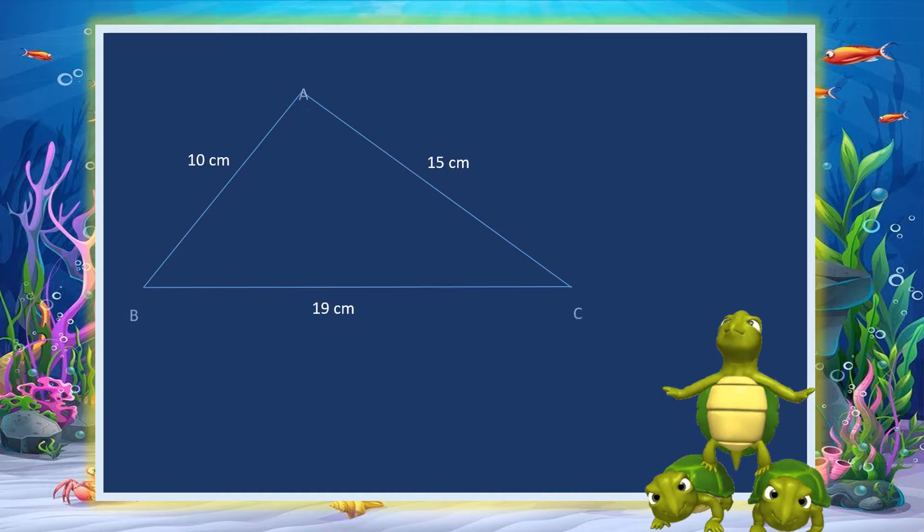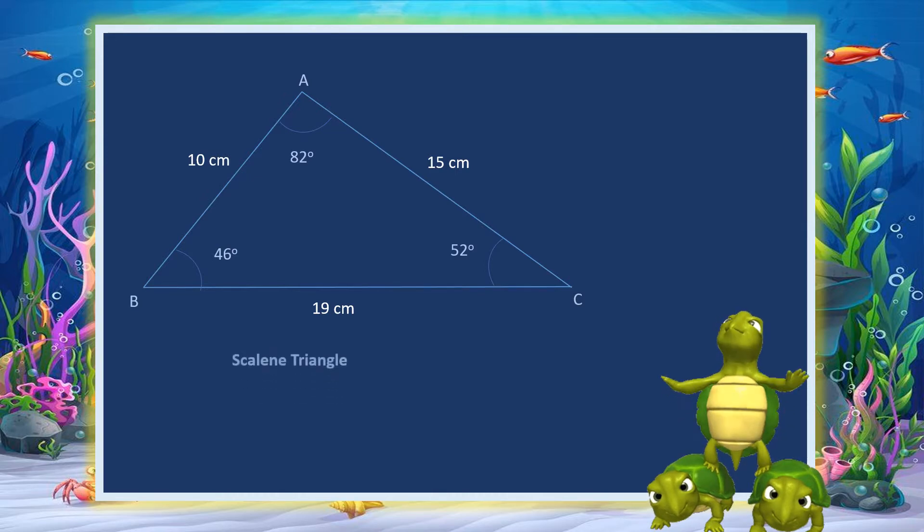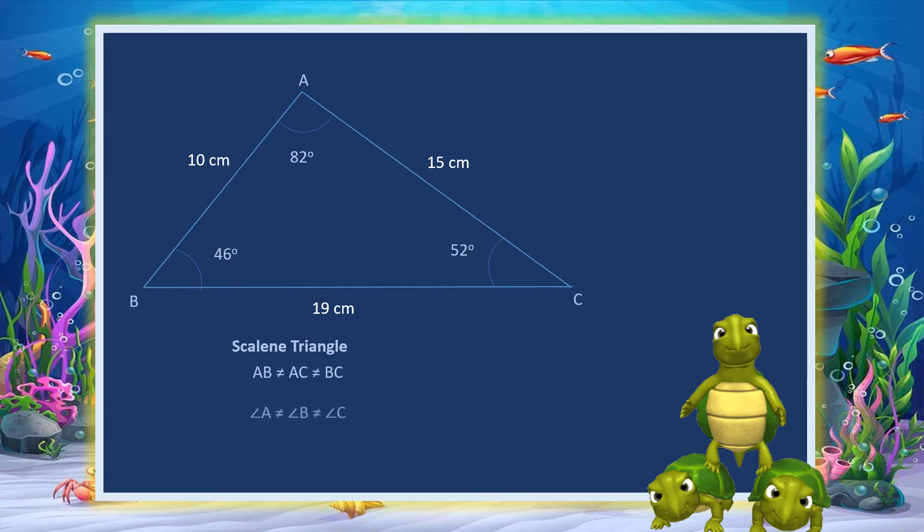A scalene triangle is a triangle in which all three sides have different lengths. Also the angles of a scalene triangle have different measures. The sum of all the angles is still 180 degrees.